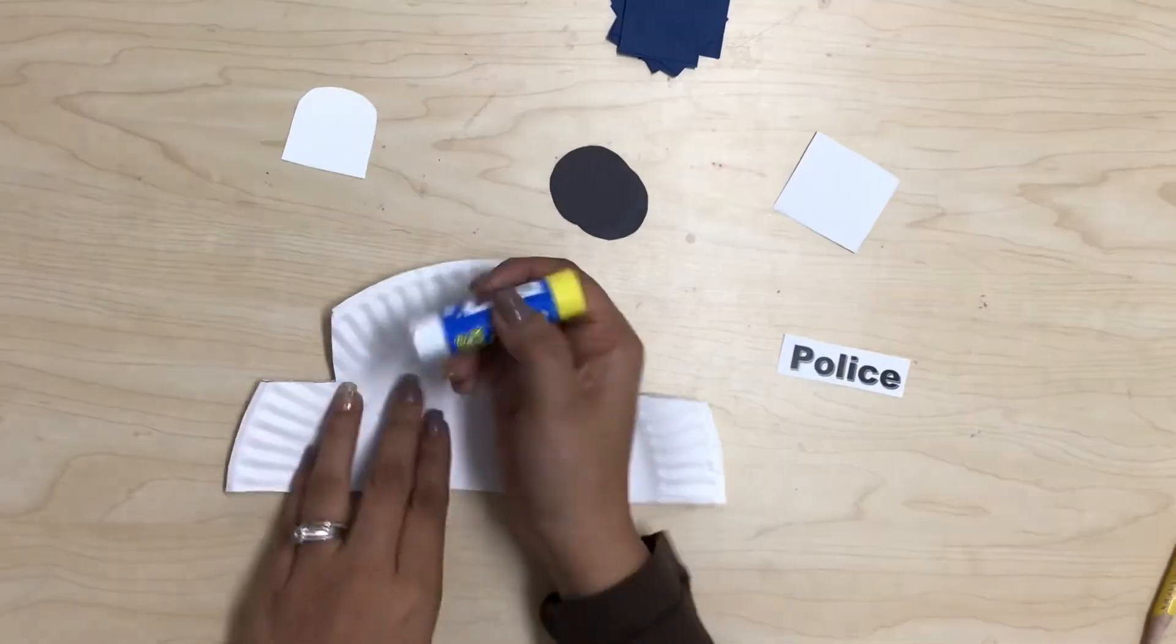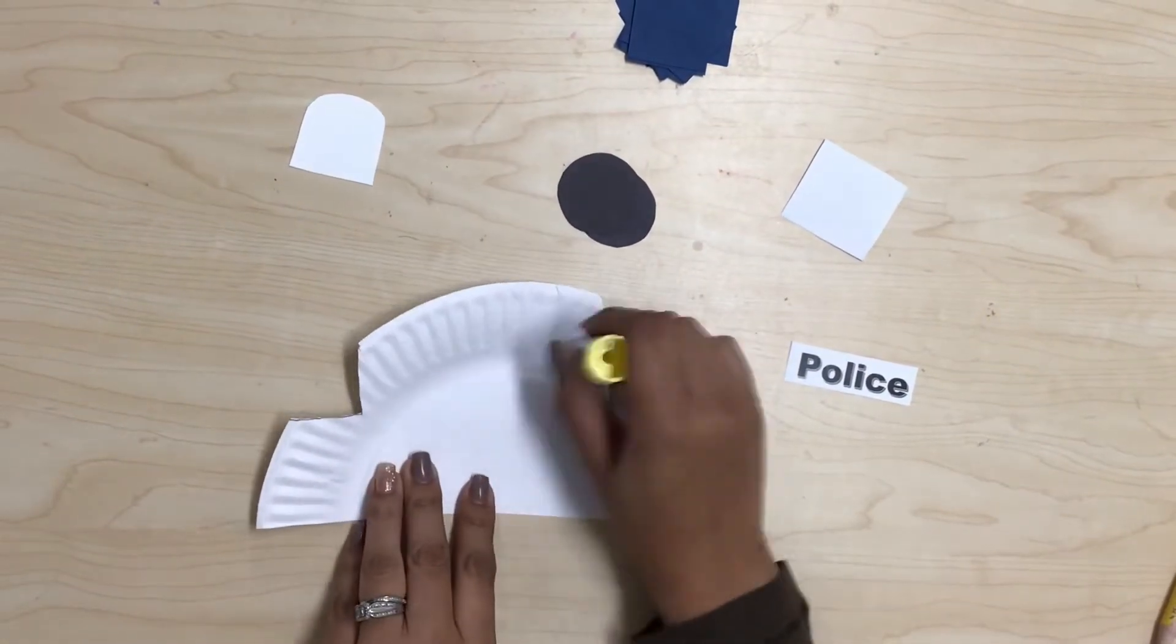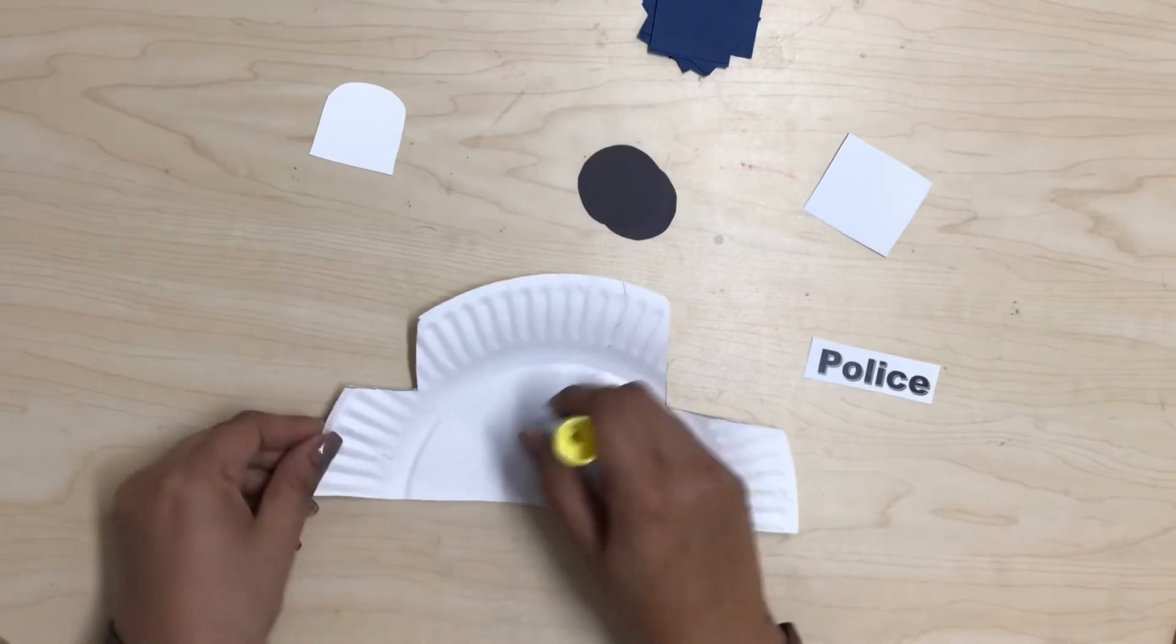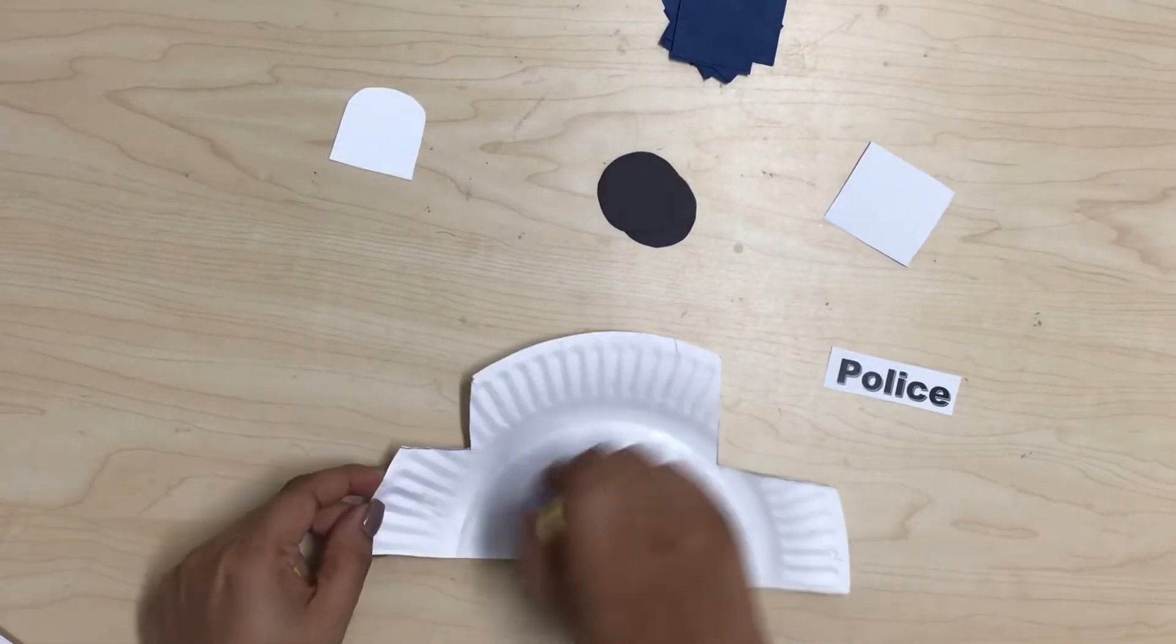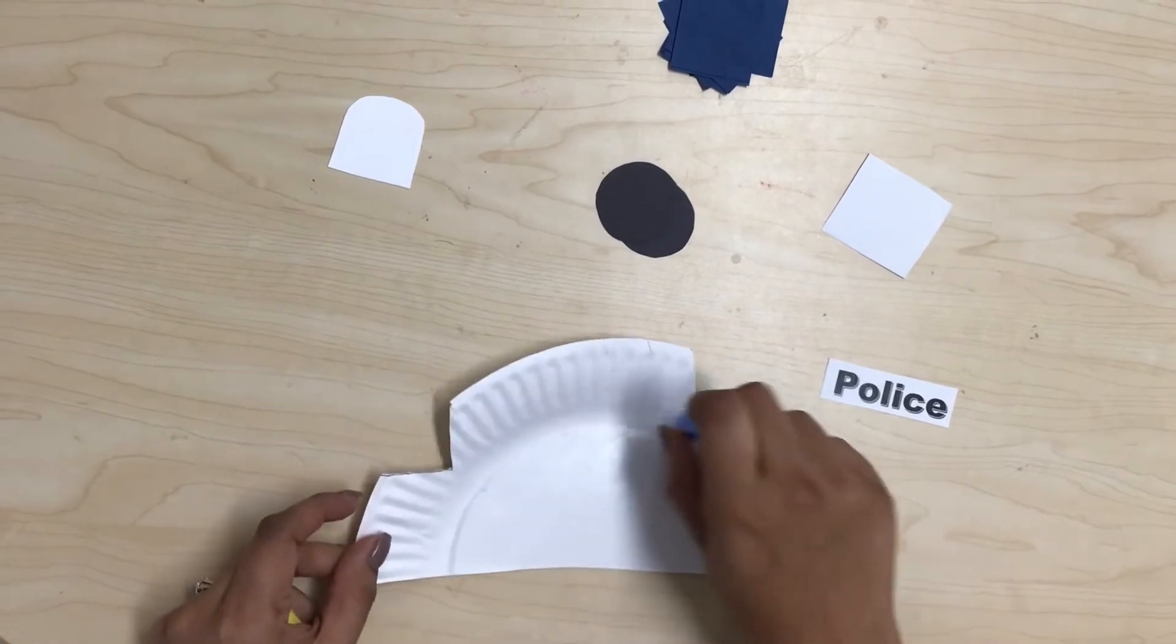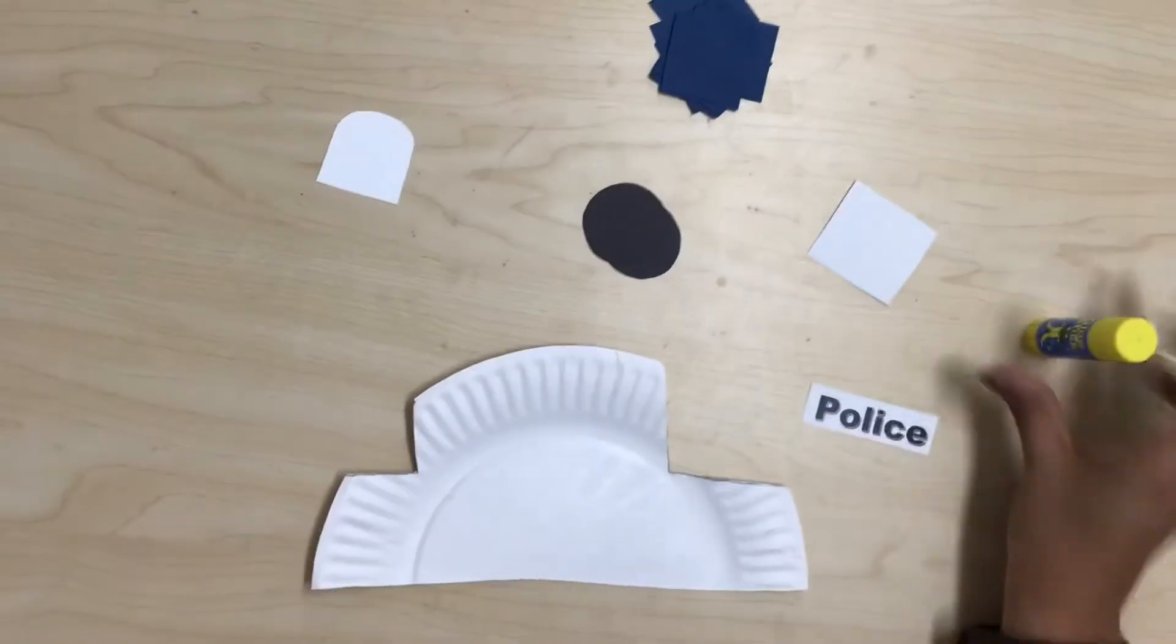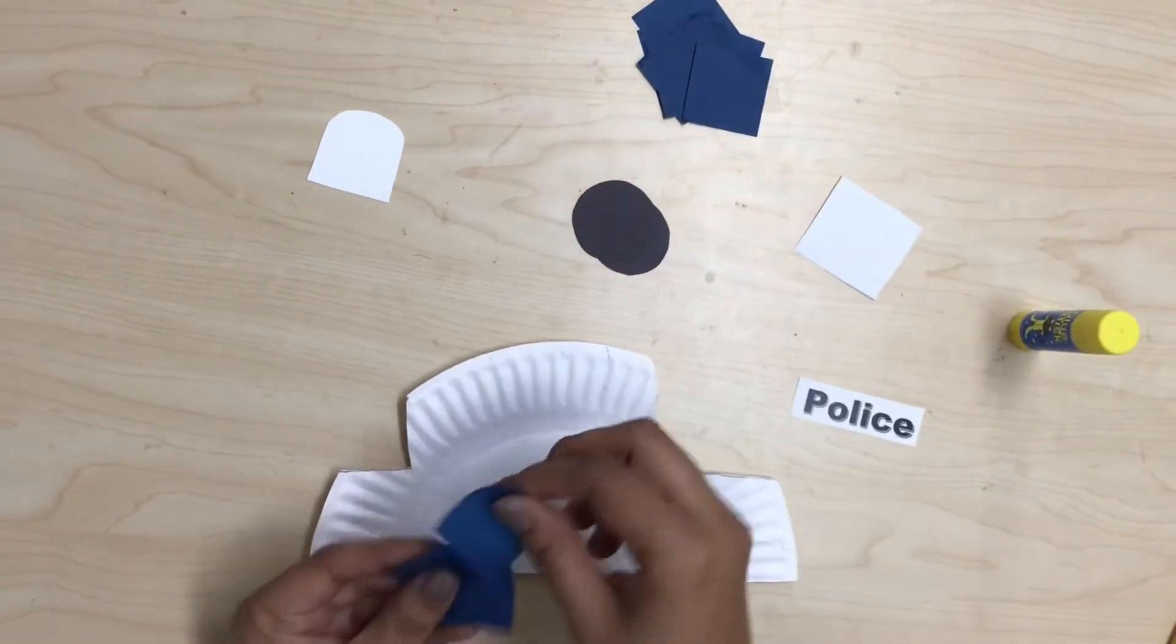Our first step, we're gonna get our glue and we are going to glue the tissue paper all around the paper plate. I'm gonna get the tissue paper and glue it.